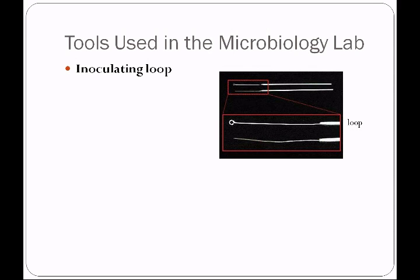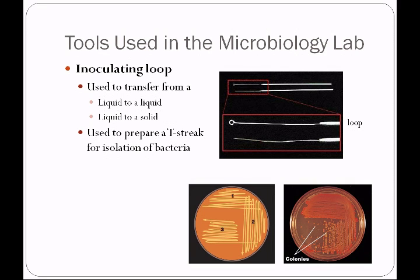We'll be using an inoculating loop — we typically just call this a loop in the microbiology lab — and it has a circular end that is very much like a bubble blower. It's used to transfer from a liquid to a liquid; a liquid film will be carried across this loop and we can transfer it into another liquid or to a solid medium. We also use an inoculating loop to prepare a T-streak to isolate bacteria, which we'll be doing in a future lab.